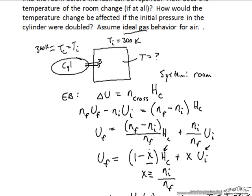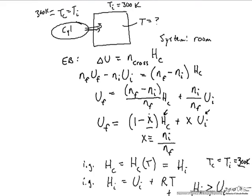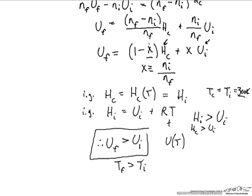The second part of the question asks how doubling the initial pressure would affect our answer. The only place where the cylinder gas properties enter our analysis is through the enthalpy of the incoming stream. But for an ideal gas, enthalpy is not a function of pressure — it depends only on temperature. Therefore, doubling the pressure won't affect our results at all, and the temperature increase would be the same if the same number of moles leaked in.